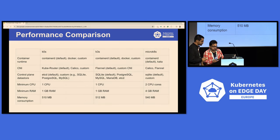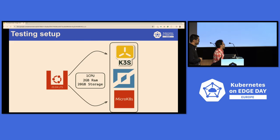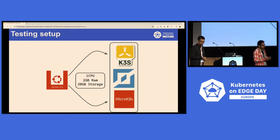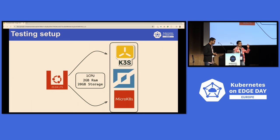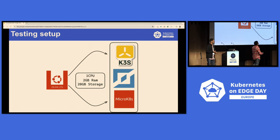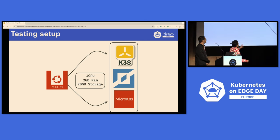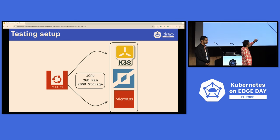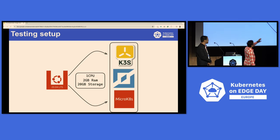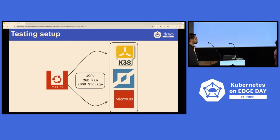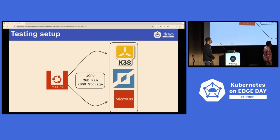By now you should have a brief understanding of K0s, K3s, and MicroK8s — all CNCF-certified distributions, of which K3s is a CNCF sandbox project, the only distribution with that status. For our benchmarks, the disclaimer is that this is running on a single node: one CPU, two gigs of RAM, 20 gigs of storage — lesser than Raspberry Pi 4 specs — running Ubuntu 20.04. Each cluster has a very minimal single-node deployment for MicroK8s, K0s, and K3s.